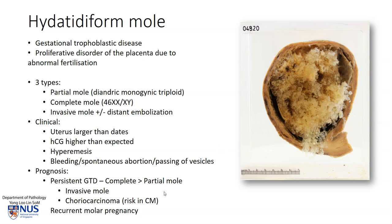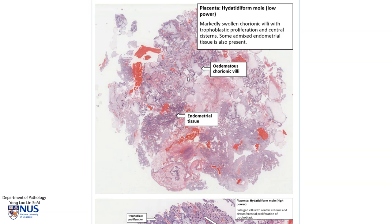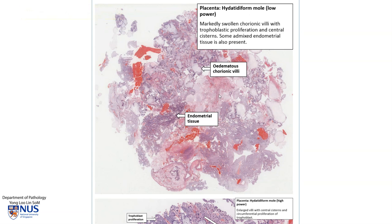Let's move on to have a look at the microscopic appearance. These pictures are obtained from PathWeb, the online pathology resource. We're looking here at some material from a hydatidiform mole. If you focus on this area, we can see very markedly swollen chorionic villi. The bluish areas around the villi are evidence of trophoblastic proliferation.